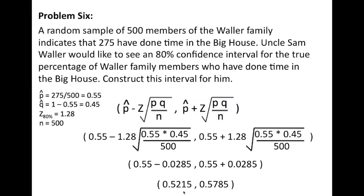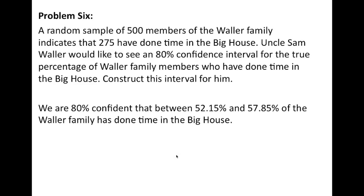We now have a confidence interval, an 80% confidence interval for p, which says we're 80% certain that the true value of p lies between 0.5215 and 0.5785. We're 80% confident that between 52.15% and 57.85% of the Waller family have done time in the big house. Uncle Sam knows all. Old Uncle Sam Waller is pleased. We've done well.